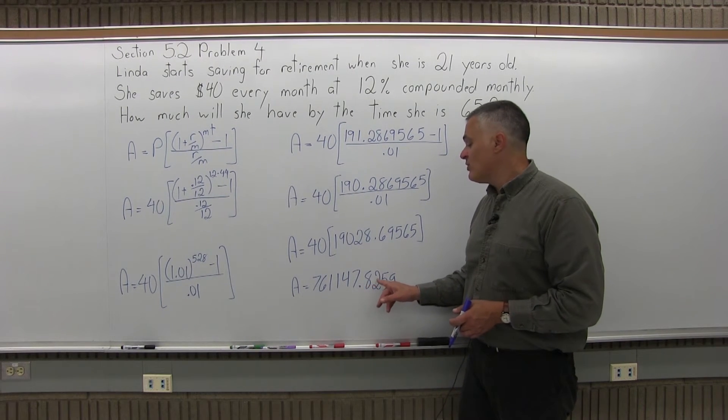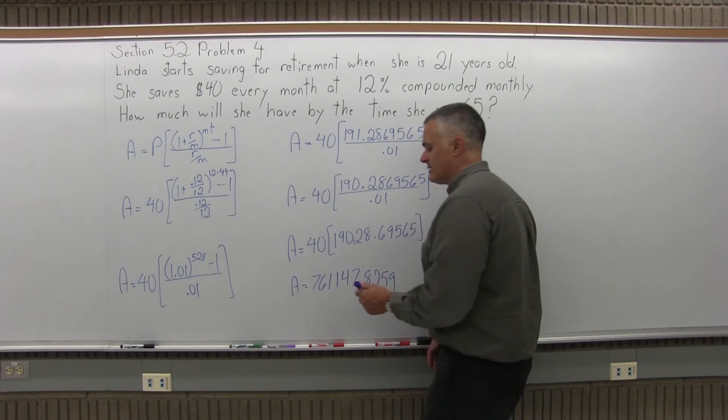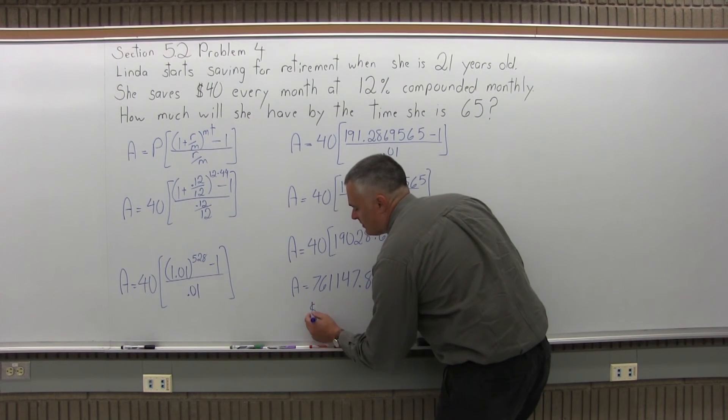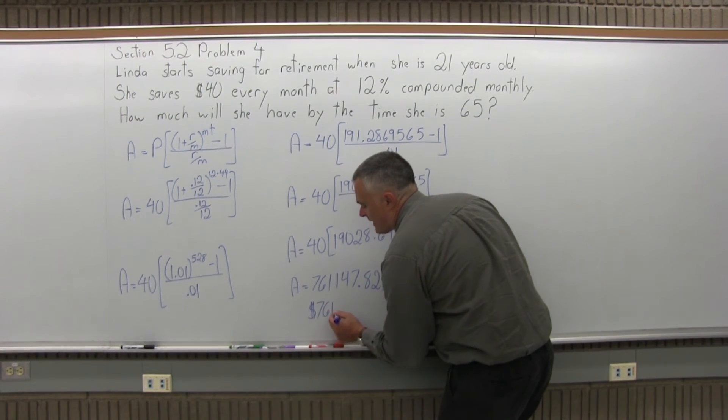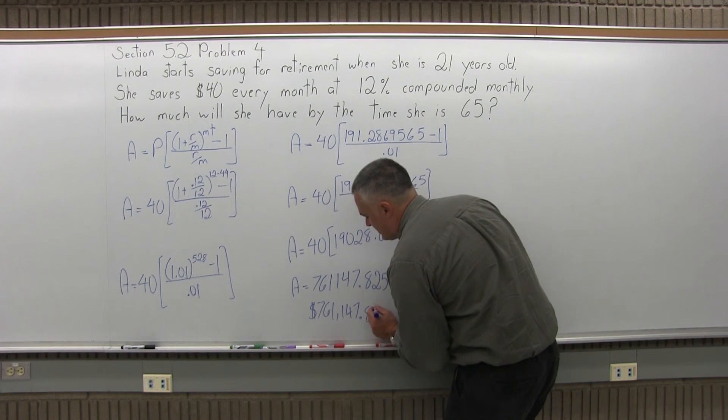So the 0.825 something is enough to make it 0.83 or 83 cents. So the final answer will be 761,147.83.